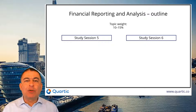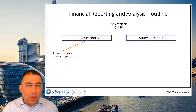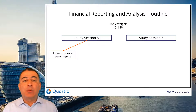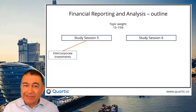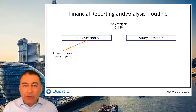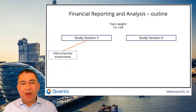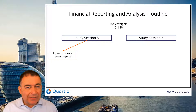We have six readings. The first three are bigger and more complex than the others. We start off with intercorporate investments — this is where one company buys shares in another company. It may be a relatively small number of shares, called a financial asset. It may be an associate company, or it may be a controlling stake, in which case we're going to be doing a full consolidation. We look at these methods and how the financial statements are affected, which is really the whole flavor of Level 2 accounting.